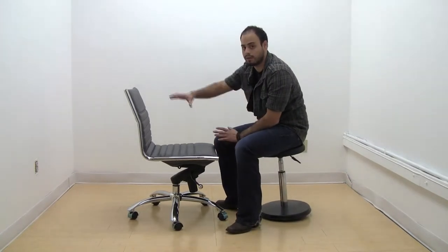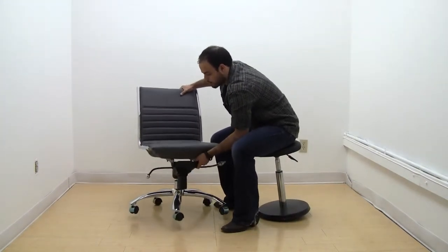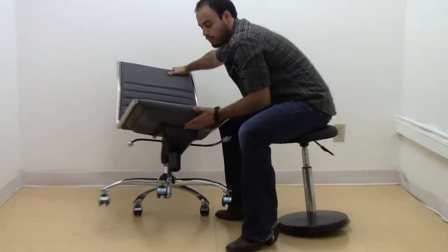Now, the leatherette on the Dirk is unique in that it wraps the entire chair, including the metal components on the bottom. And if we just flip it up like this, you can see how the leather wraps all the way down to the bottom.